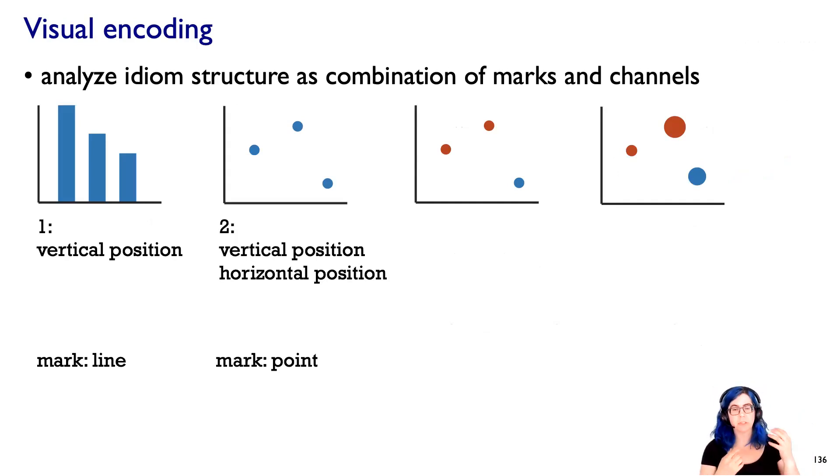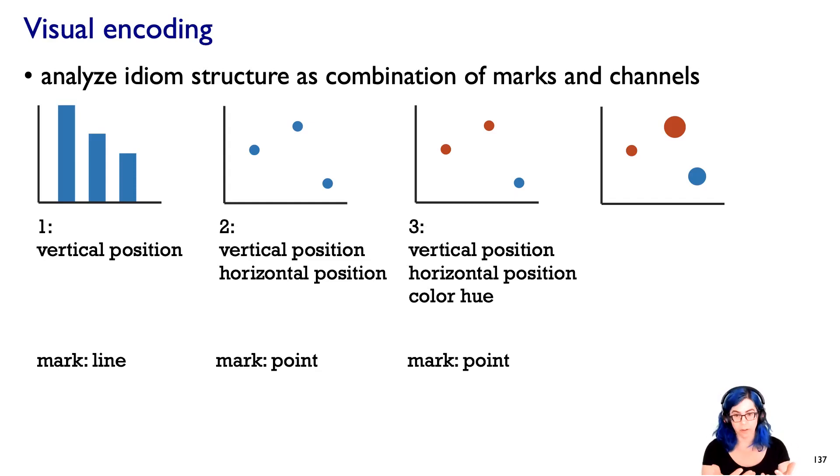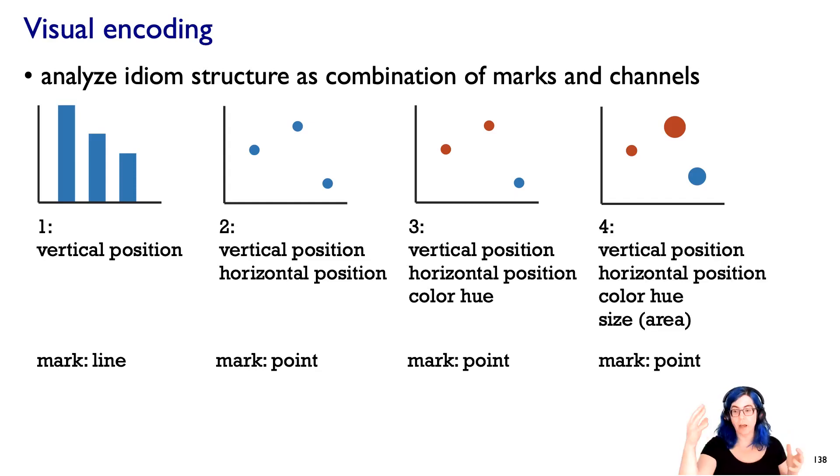What about a scatter plot? We're separately encoding vertical position and horizontal position, and we've needed to switch to a mark type of point. Line would not work for both of these anymore. We could add a third channel - we could use color coding, specifically hue here - and we're staying with our point mark type. We could add another channel. We could size code. We could have these area coded, color coded circles. This gives us a vocabulary to analyze with.